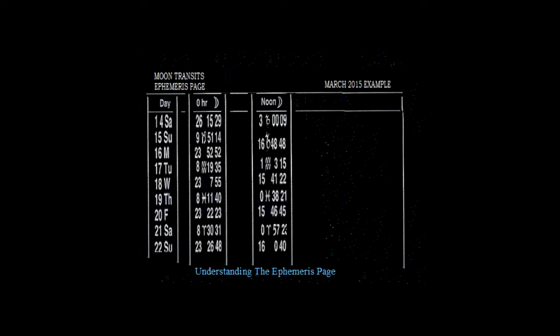We jump down to the 17th of March, and we see that the moon has just entered Aquarius at 1 degree. Compare that to the next day, the 18th, it's in 15 degrees. So we subtract 1 degree from 15 degrees and we have 14 degrees — that should be 14 degrees in the sign Aquarius, which is an air sign. A lot of people think it's a water sign, but it's helium or etheric air. We have the trinity of air, which is Gemini, Libra, Aquarius.